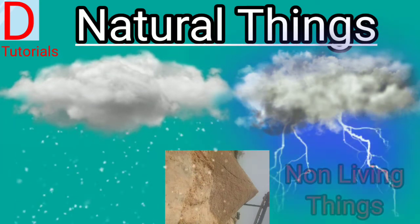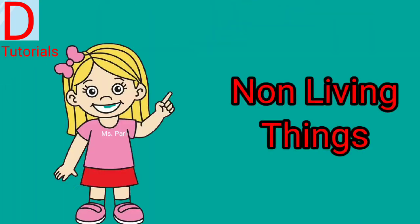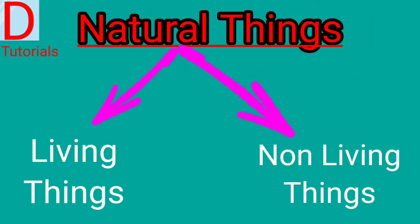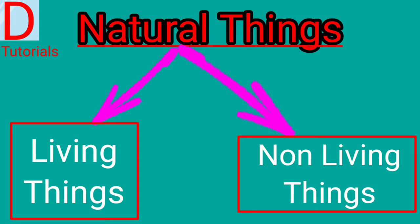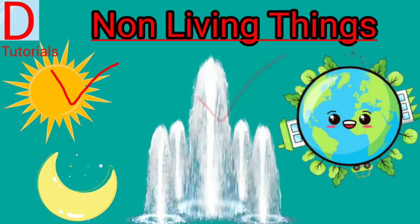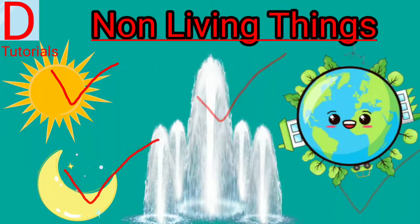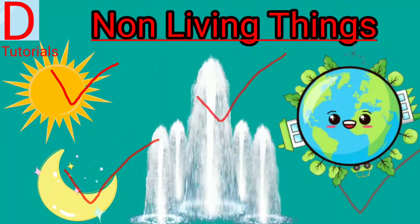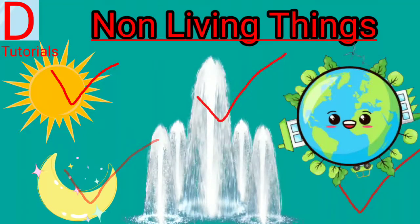These are non-living things. Natural things have two types: living things and non-living things. Sun, water, moon, planet — all are non-living natural things.